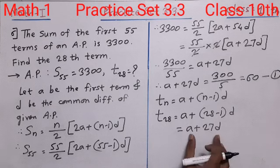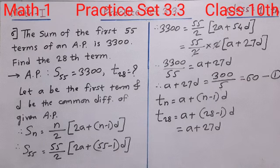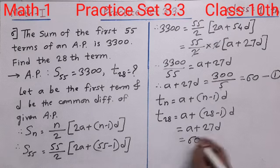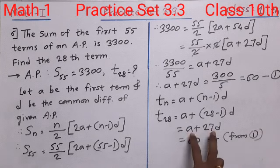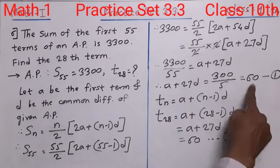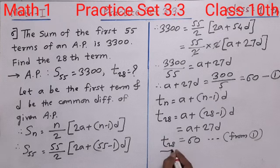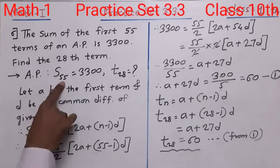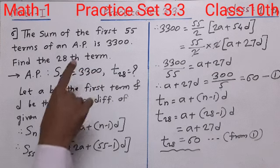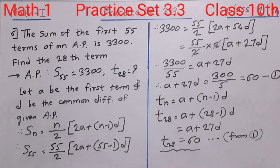Now, A plus 27D has a value from equation number 1, where A plus 27D equals 60. So we directly write 60 in place of A plus 27D, from equation 1. Therefore T28 equals 60, meaning the 28th term of the AP whose sum of the first 55 terms is 3300 is 60.